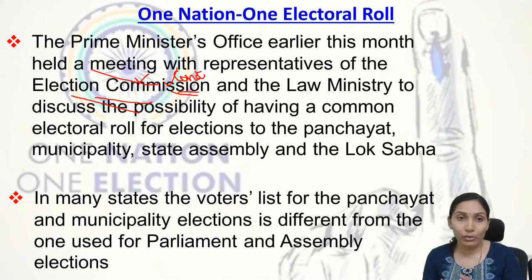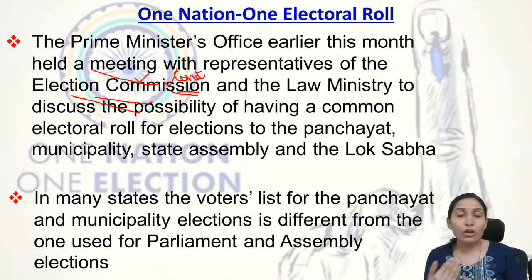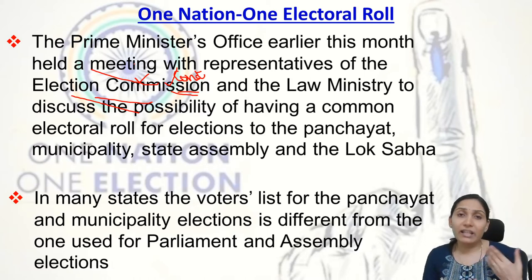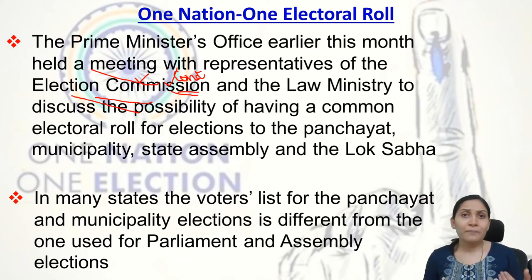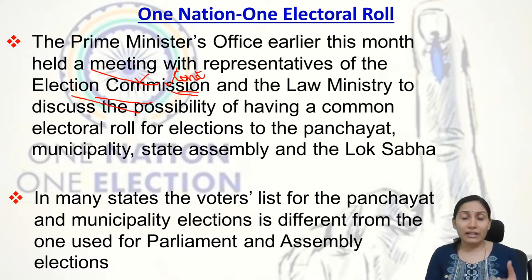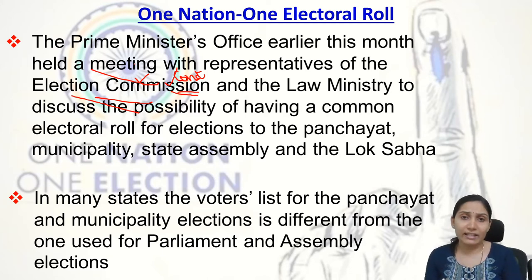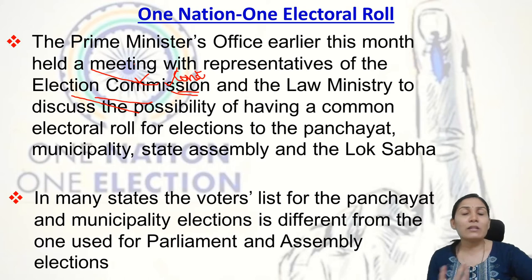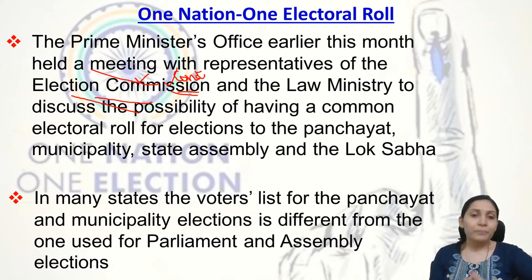This meeting was held to discuss the possibility of having a common electoral rule for elections to Panchayats, Municipalities, State Assemblies, and the Lok Sabha. Panchayats and Municipalities form the lowest tier or grassroot level of government — the local self-government. Then we have State Assemblies, which can be unicameral or bicameral, and then the Lok Sabha at the national level.